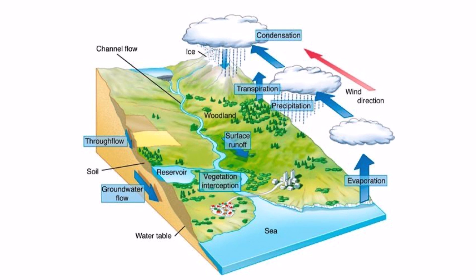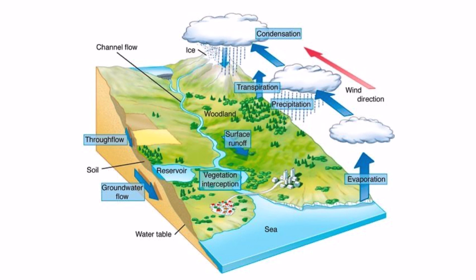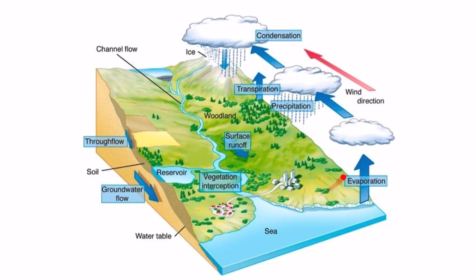Vegetation interception is a physical factor affecting water transfers — trees absorb water at their roots and transpiration occurs as a result. The diagram also shows through flow and groundwater flow. Through flow is due to gravity, where water drains through the soil until it reaches a stream or river. Groundwater flow occurs in the aquifer — that's your permeable rock — and involves the transfer of water to lakes, rivers, and the sea. This is a closed system, so water is neither allowed to leave nor enter the earth's surface and atmosphere.